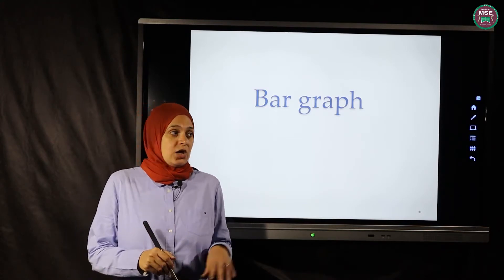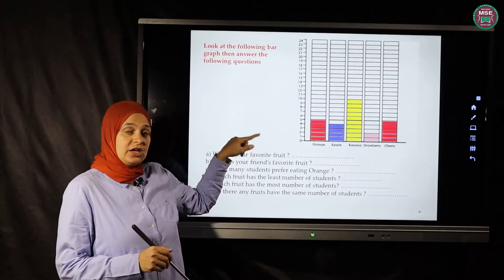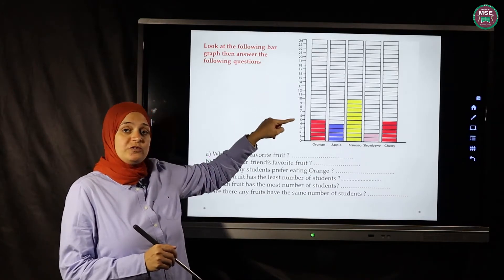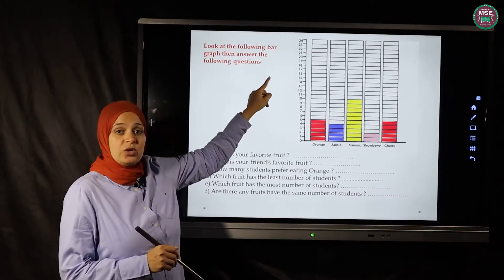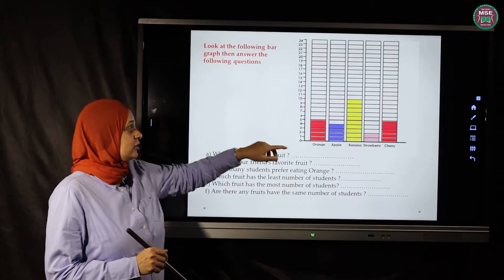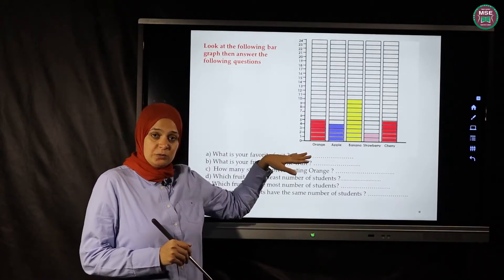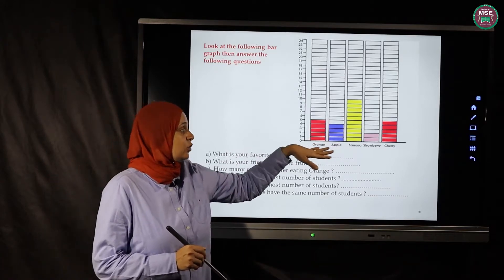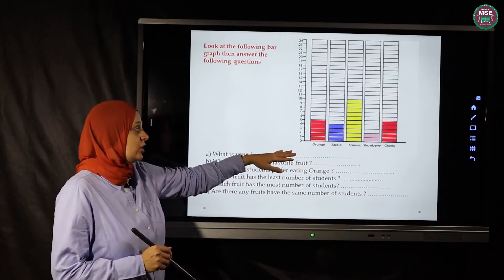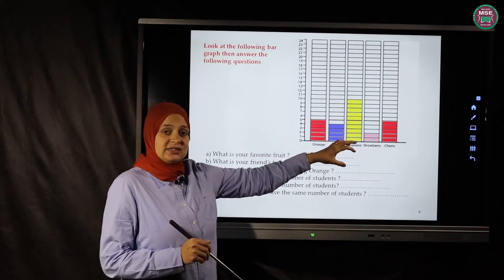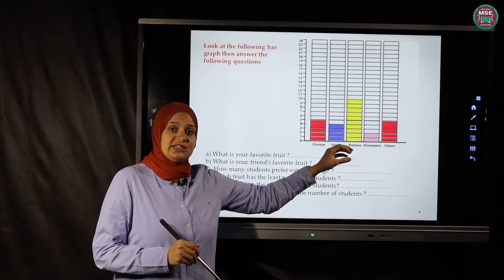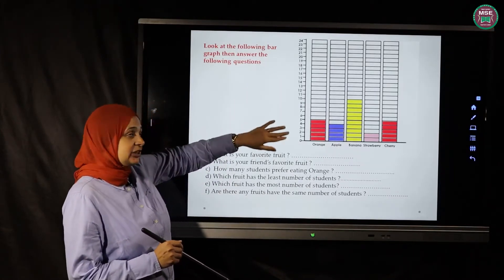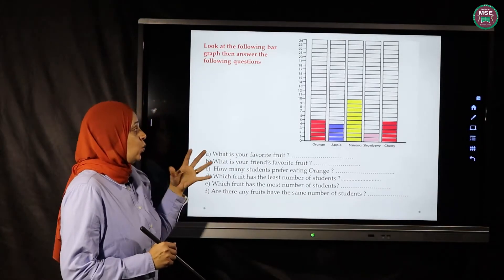In bar graphs we have two lines. One of them is the vertical line — it goes from down to up, and it always has the numbers of the quantities we are drawing. The horizontal line goes along the bottom of the paper, and on it we write the names of the data we are going to collect.